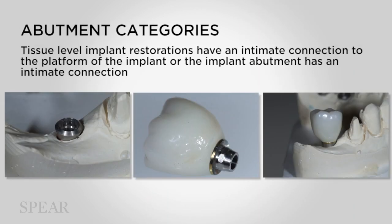Notice in the photographs there's a tissue-level implant analog in a model, and then you can see a photograph of the crown. That crown has a metal abutment that has been attached to it that fits directly on top of the implant platform. That entire silver collar on the tissue-level abutment is covered by the restoration.